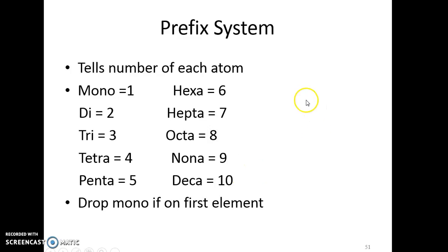Now what we do is we put the prefix, then the element in the front. Then we put a prefix and then the element that is in the back with -ide on the end. So mono is only used if it's on the second element. We don't ever use mono in the front part.